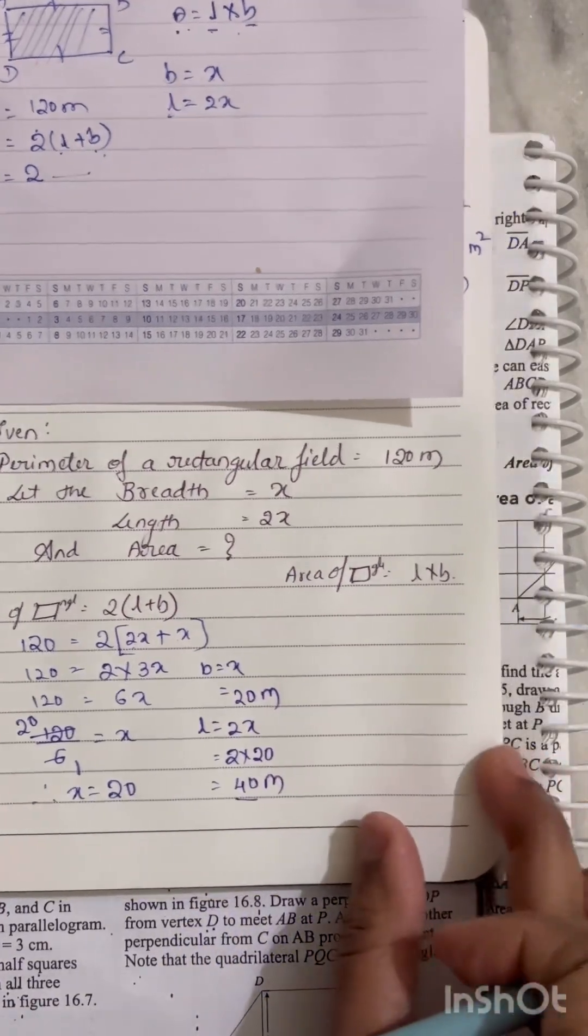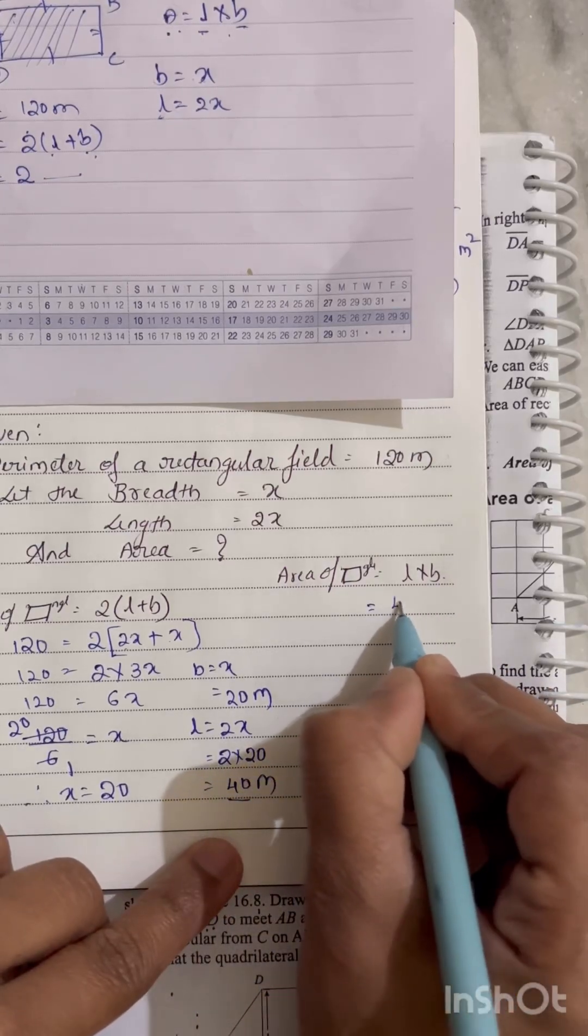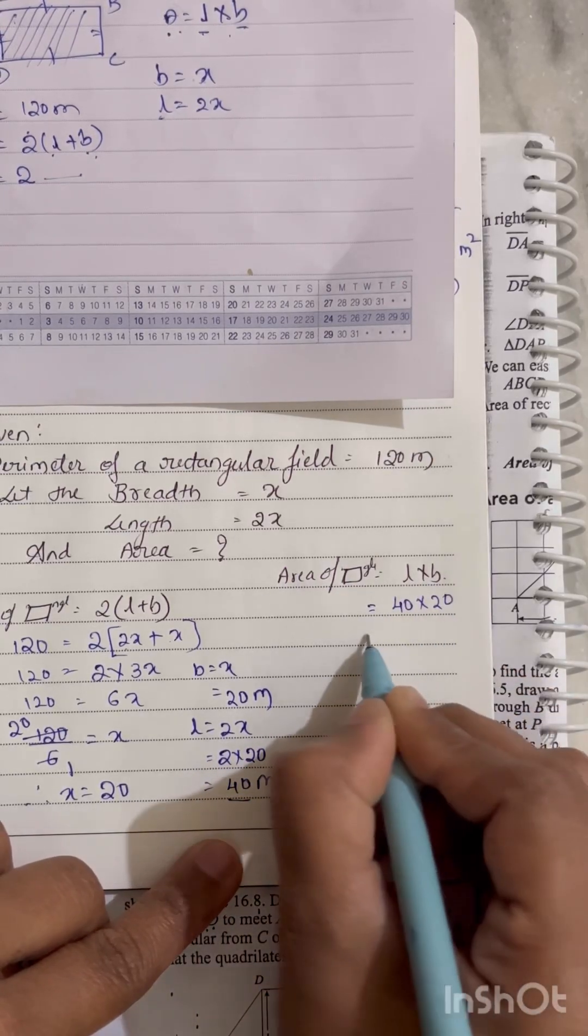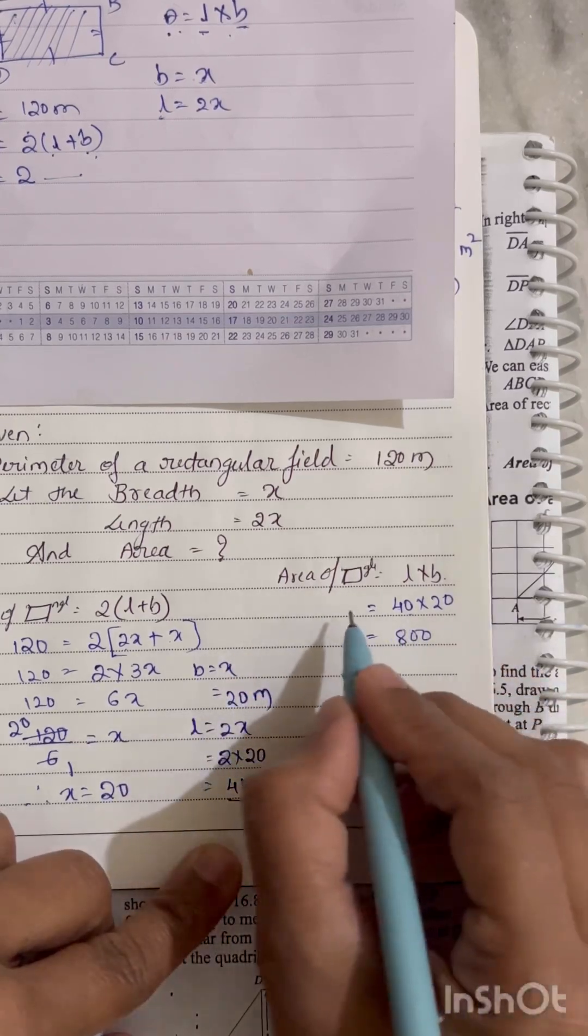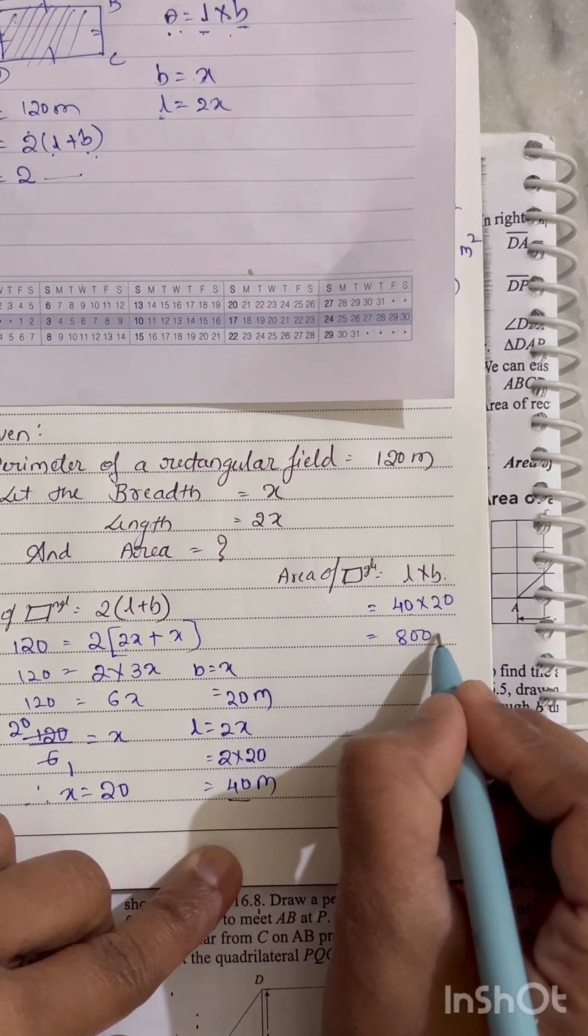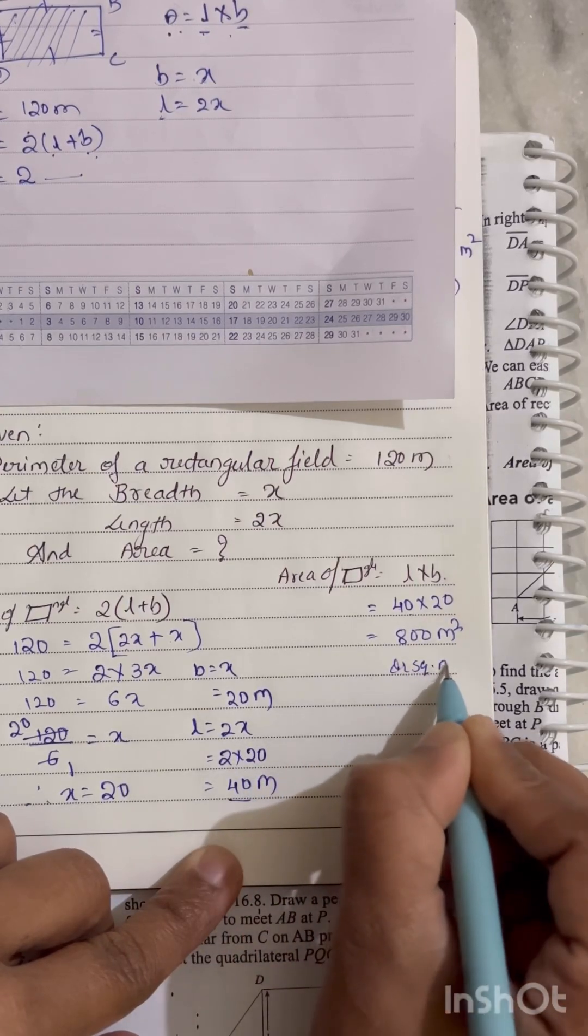Now these both values we have to substitute to find out the area of the rectangle field. Length will be 40 into 20. See, 0 times 0 is 0, 4 times 2 is 8. It means area of the rectangular field is 800 meter square or we can just write square meters also.